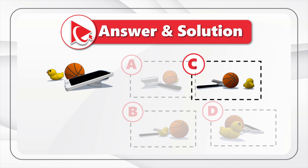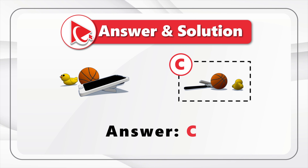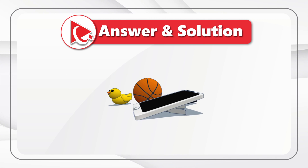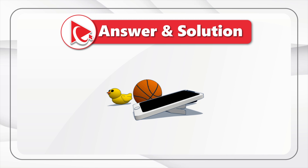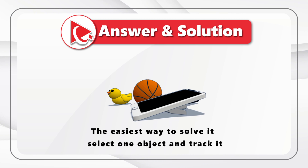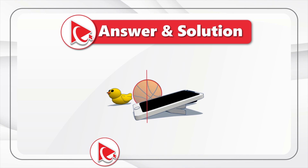If your answer was choice C, you answered it correctly. There are four objects on the original three-dimensional image: we have a duck, a basketball, a smartphone, and a hammer, which is barely noticeable on the original picture. The easiest way to solve this challenge is to select one object and track it on the opposite side. I selected a duck, but you can also select a hammer or a smartphone. It is a little harder with the ball because it's in the middle and it's a symmetrical object.